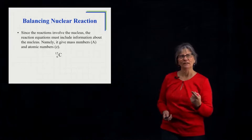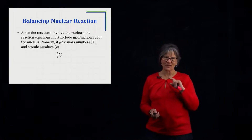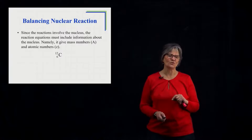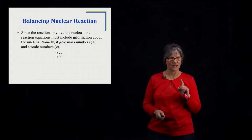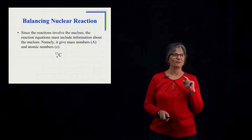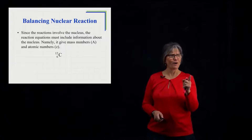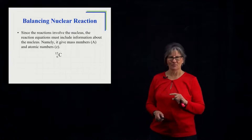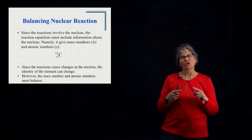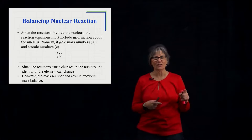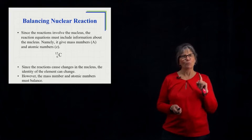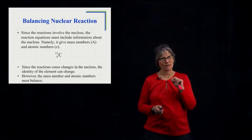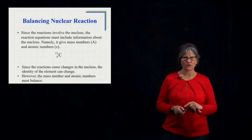We have to make sure that the mass number — that's the top number, like the 12 — and the atomic number — that's the bottom number, like the 6 — are balanced. Atomic number is the number of protons; the mass number is the number of protons plus the number of neutrons. Since the atoms are changing, we're not keeping the identity of the atoms constant, but what has to remain constant is the number of protons and neutrons being balanced on both sides.